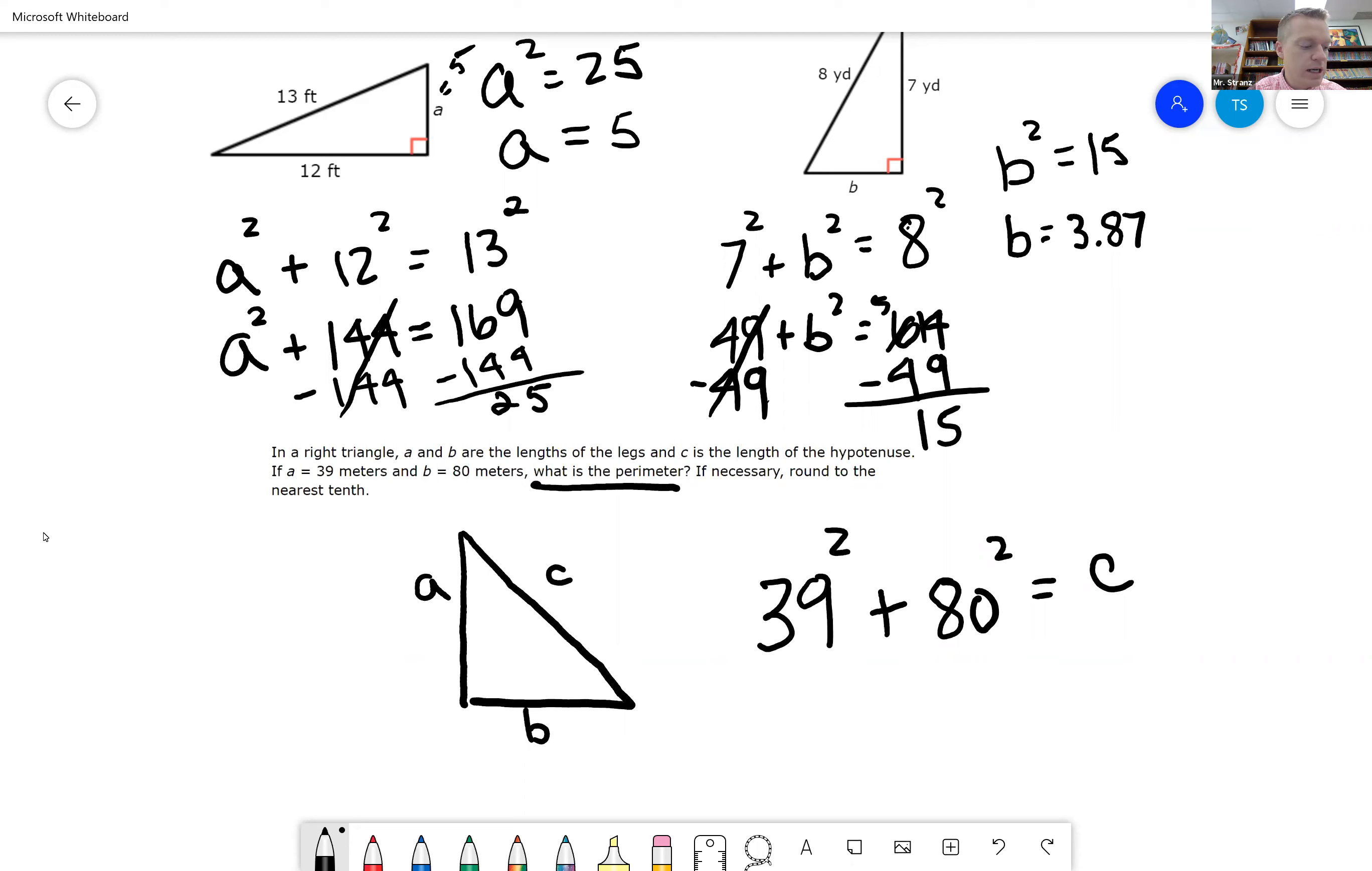39 times 39, so 39 squared is 1521. 80 and 80 is going to be 6,400.